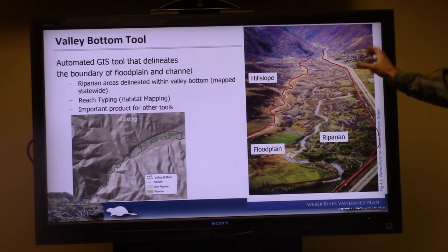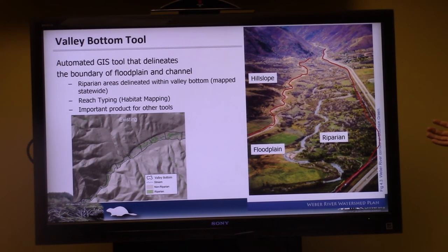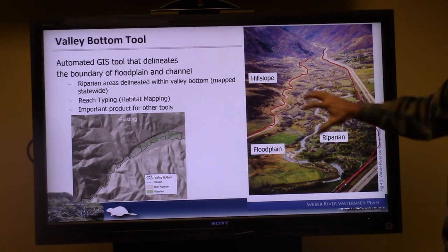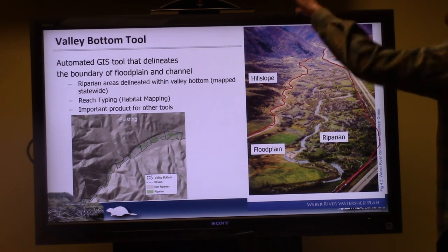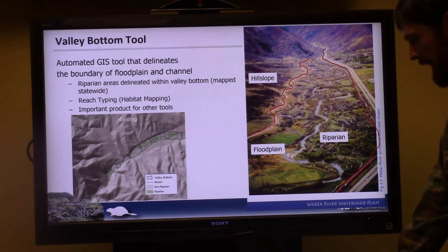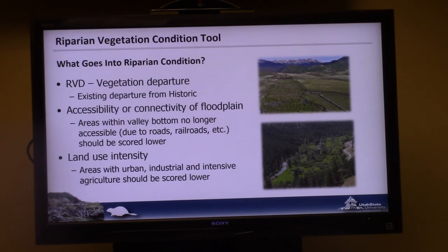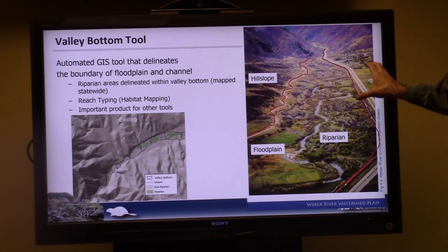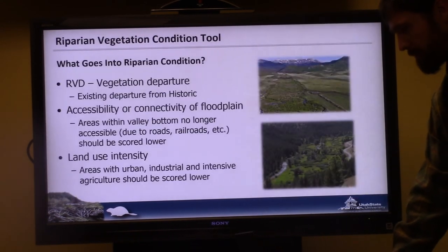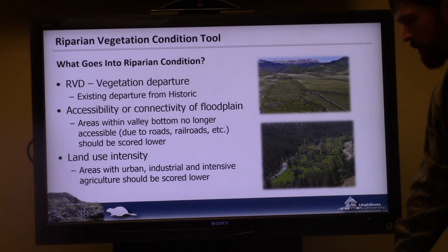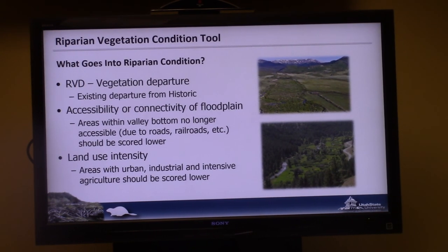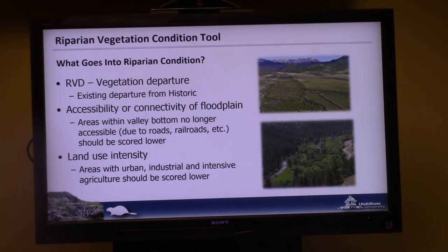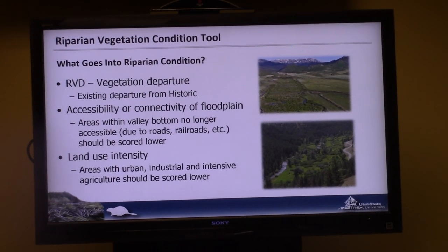The valley bottom tool provides your first cut at identifying where river-related processes occur versus more upland-related things. We have riparian areas mapped for the whole state, shown as valley bottom in black and classified riparian pixels in green. Another tool that Wally and others have recently developed is the riparian vegetation condition tool, with a paper available on that work as well.